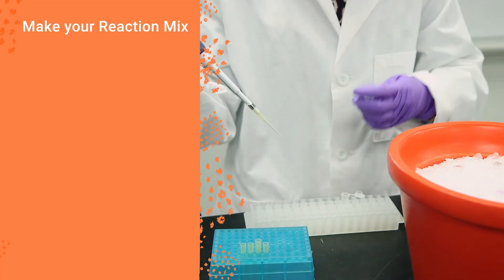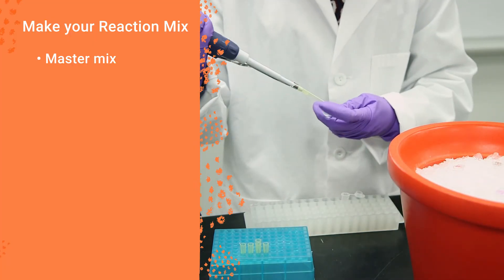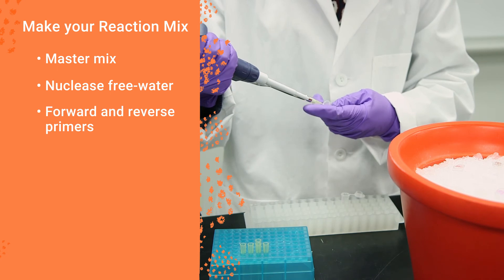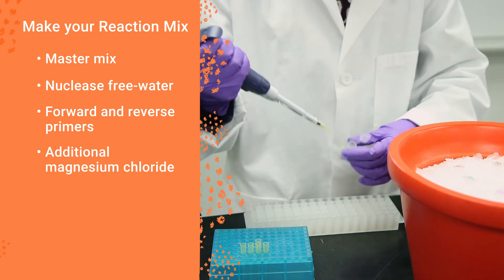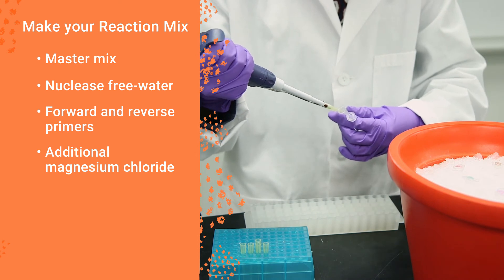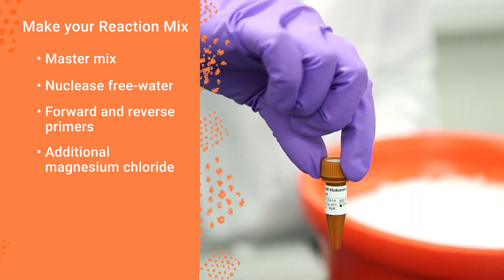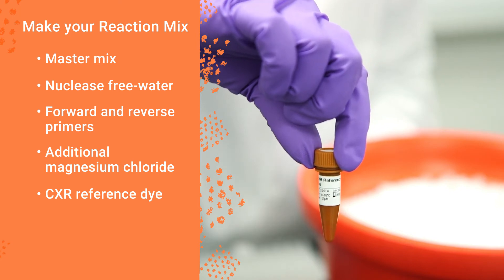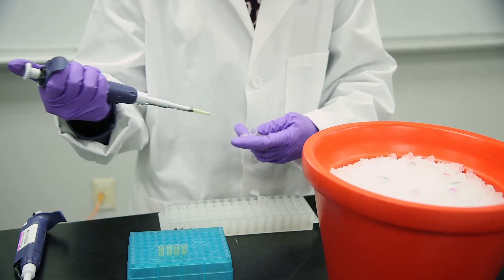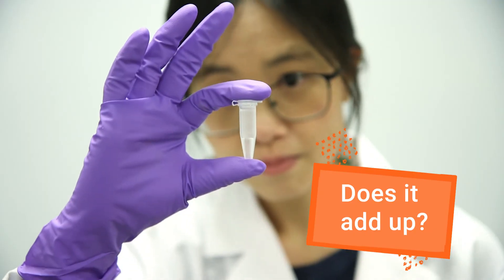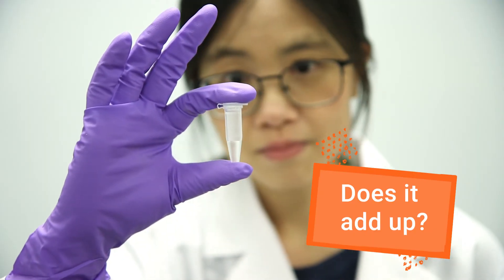Prepare your reaction mix in a separate tube by adding the master mix, nuclease-free water, forward and reverse primers, and any additional magnesium chloride that you may need. Depending on which instrument you're using, you might also need CXR reference dye. The exact volumes of all of these will vary based on the concentrations of all your reagents, but make sure they add up to your planned total reaction volume.